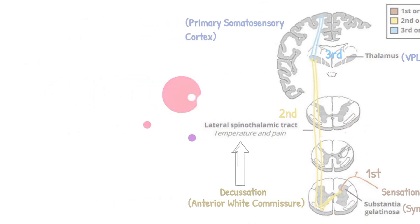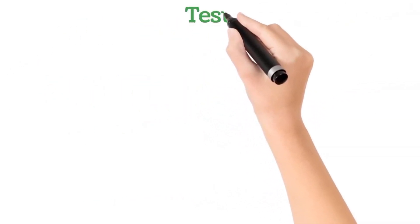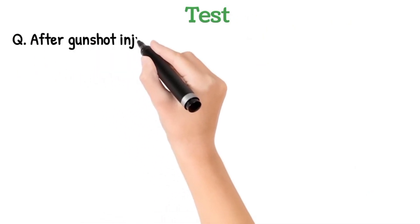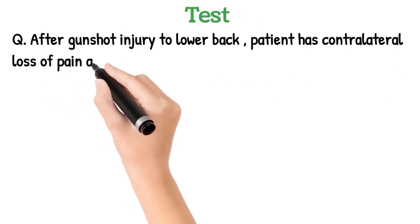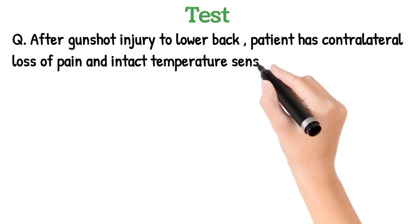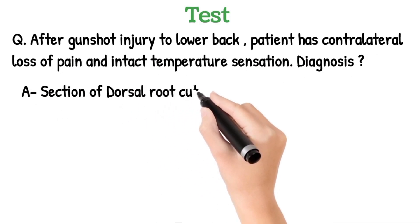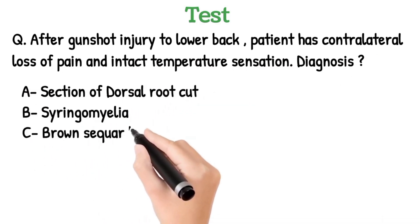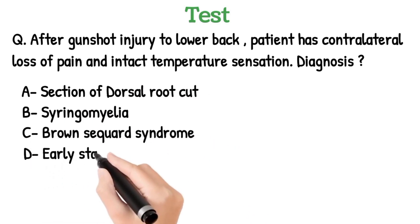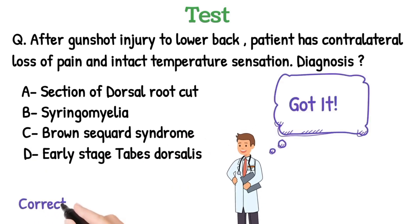Now it's time to test your knowledge. After a gunshot injury to the lower back, a patient has contralateral loss of pain but intact temperature sensation. What is the diagnosis? Options are: A — section of dorsal root cut; B — syringomyelia; C — Brown-Séquard syndrome; D — early stage tabes dorsalis. The correct answer is option A — section of dorsal root cut.